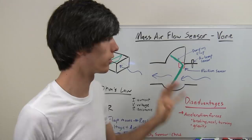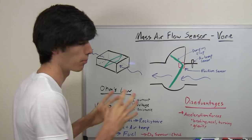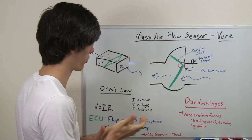I don't believe this is used much anymore. But anyways, mass air flow sensor vane type. The difference with this is it's actually more of a mechanical system rather than the hot wire, and I'll explain why that's a disadvantage and why it was phased out.